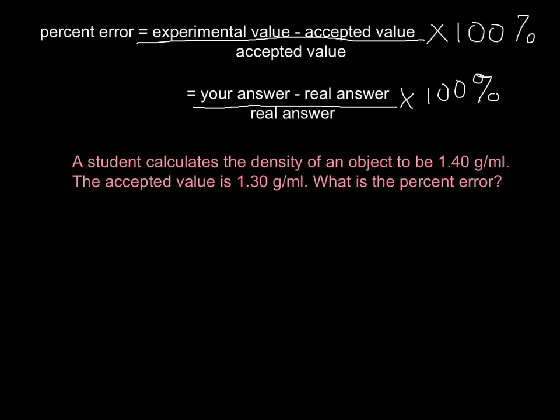Let's do a for example. A student calculates the density of an object to be 1.40 grams per milliliter. The accepted value is 1.30. What is the percent error?